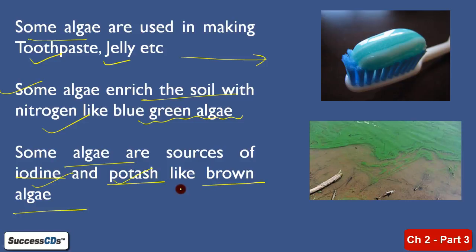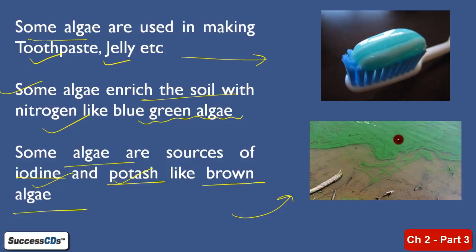For example, we have brown algae, as you can see in the picture indicating the algae. You can see algae — green in color — which can actually photosynthesize. It is considered to be a plant, so it takes in CO2 and releases oxygen, which is taken by the aquatic animals for their respiration.